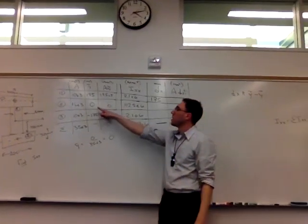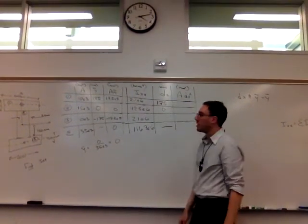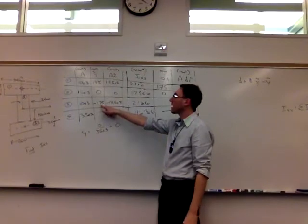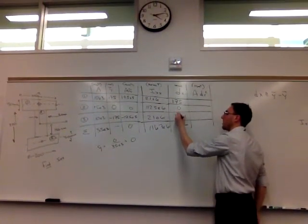Shape two, zero minus zero is zero. And shape three, negative 175 minus zero is negative 175.